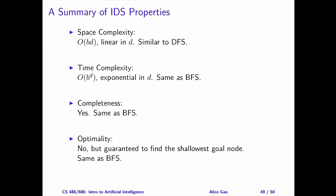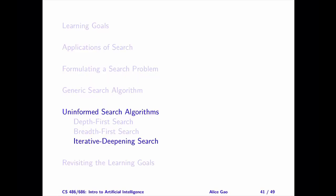Here's a recap of the IDS properties. IDS is an amazing example of a win-win situation. Similar to DFS, IDS requires linear space only. Similar to BFS, IDS is complete and is guaranteed to find the shallowest goal node. IDS also has the same time complexity as BFS, although the exact number of nodes visited by IDS is slightly larger than that of BFS. That's everything on the iterative deepening search algorithm.